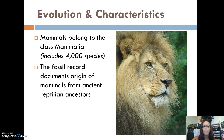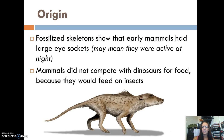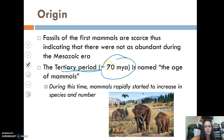So evolution and characteristics. Mammals belong to class Mammalia, which includes 4,000 species. The fossil record documents that the origin of mammals actually comes from ancient reptile ancestors. These fossil skeletons show that early mammals had large eye sockets, meaning they were probably active at night, and they didn't compete with dinosaurs for food because mammals fed on insects. The fossils of the first mammals are pretty scarce, so they really weren't that abundant during the Mesozoic era when the dinosaurs were around. But the Tertiary period, roughly 70 million years ago, is actually named the Age of Mammals because during this time mammals rapidly increased in species and number.